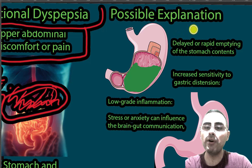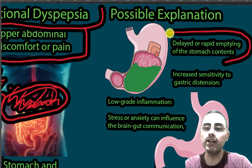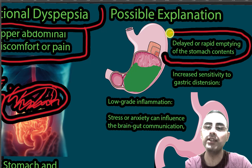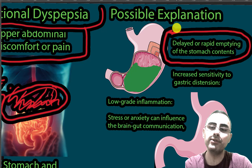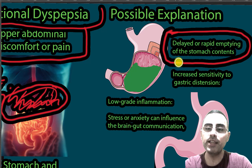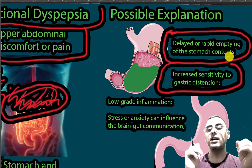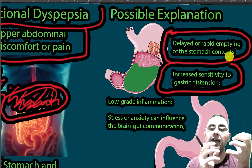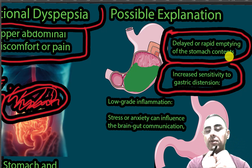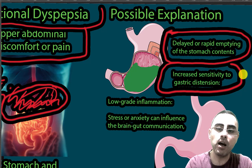The exact cause of functional dyspepsia is not known, but it is likely correlated with delayed or rapid emptying of the stomach contents — related to the kinetics of the stomach. Increased sensitivity to gastric distension is also important; when food causes gastric distension and hypersensitivity is present, pain can be felt.